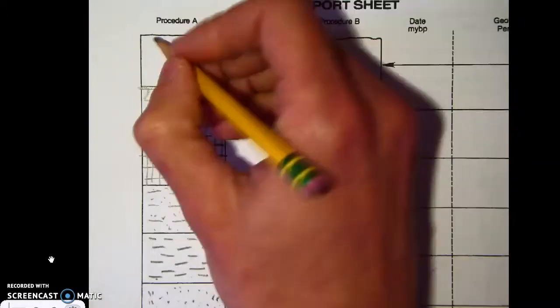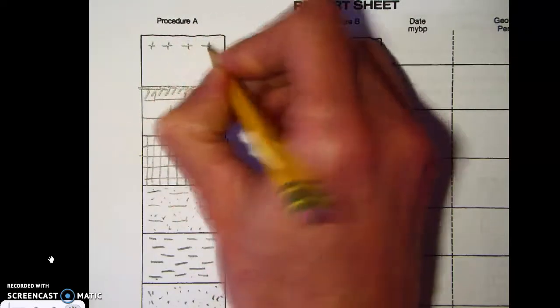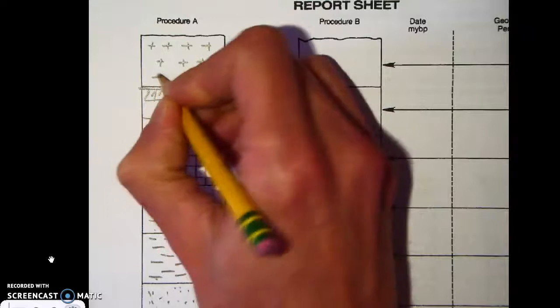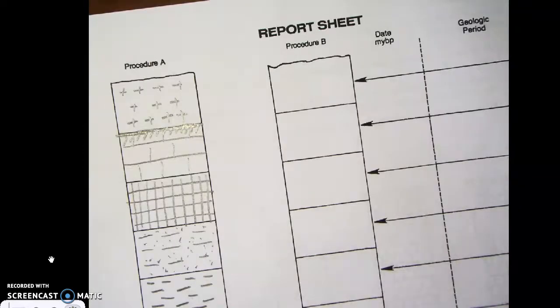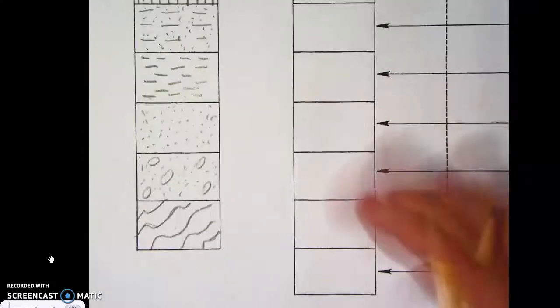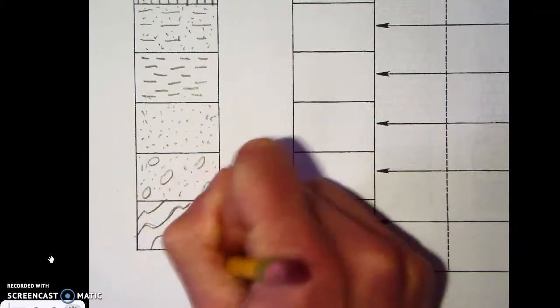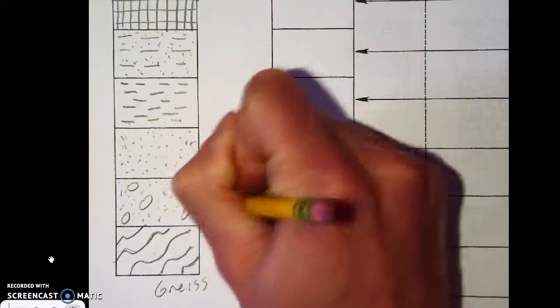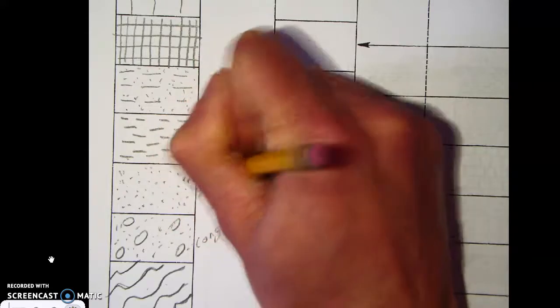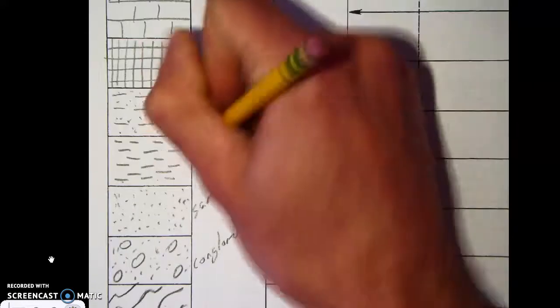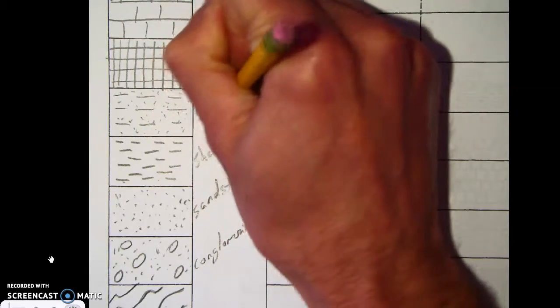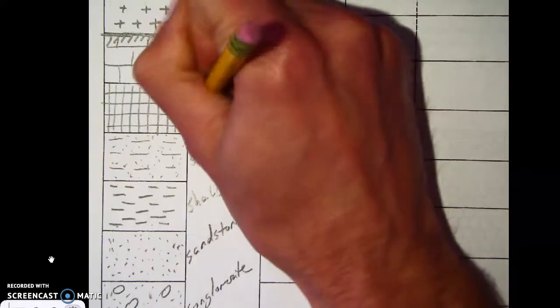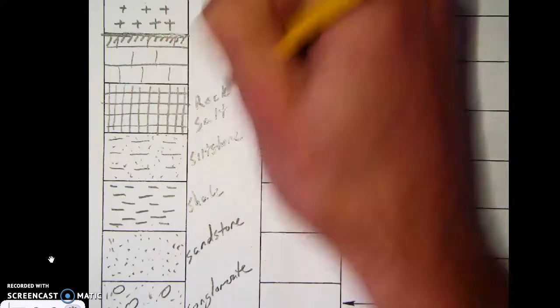And I think it would make sense to label these. So if we go back to the bottom we have our gneiss, we have our conglomerate, we have our sandstone, shale, siltstone, rock salt, limestone.